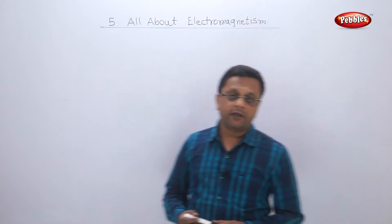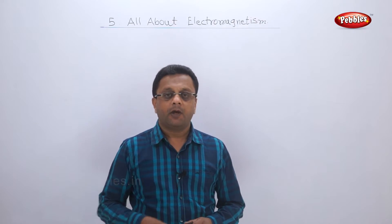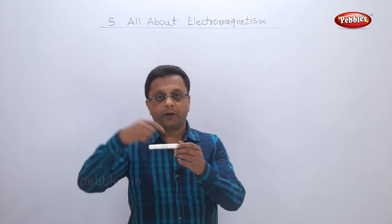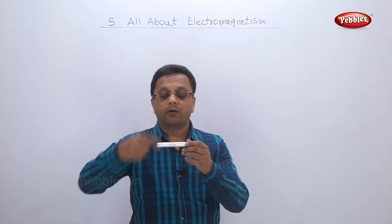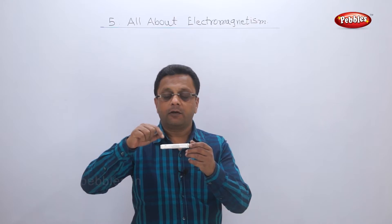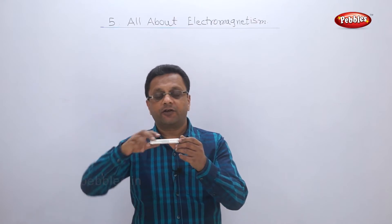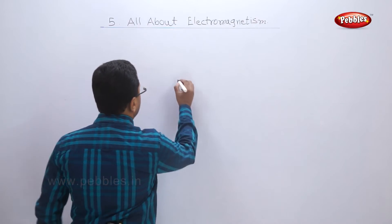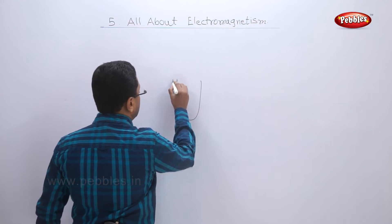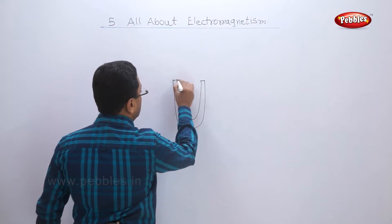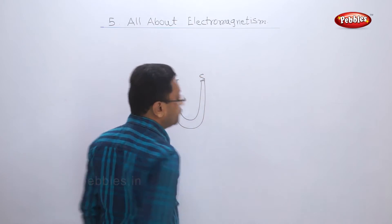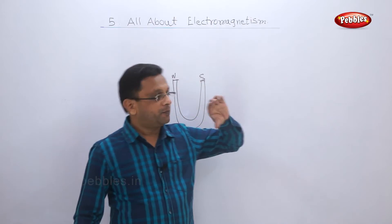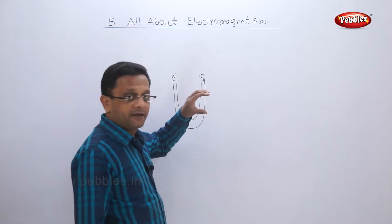Before going ahead, let us see one experiment. If I take an aluminum rod, one solenoid is prepared - that means one copper coil is wound on this. Now this copper coil, this end is attached to the battery, this is attached to the stand. This is the horseshoe magnet - you know, the magnet of this shape. This is called the horseshoe magnet. Now this magnet is placed like this, and this conductor, this aluminum rod, is placed like this.